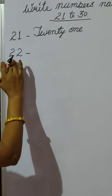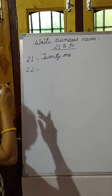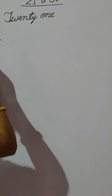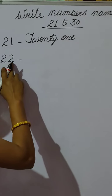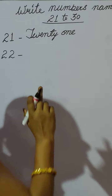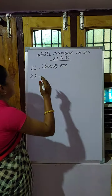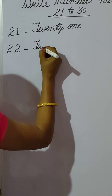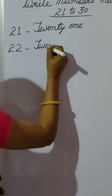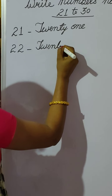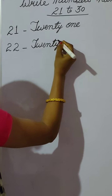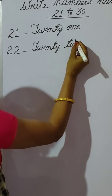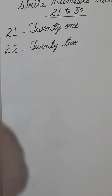Then, what is the spelling of 22, children? First, what we have to write? First we write the spelling of 20, then we have to write the spelling of 2. We write 20: T, W, E, N, T, Y. Then for 22, we write T, W, O — 2. TWENTY-TWO. 22. Okay.